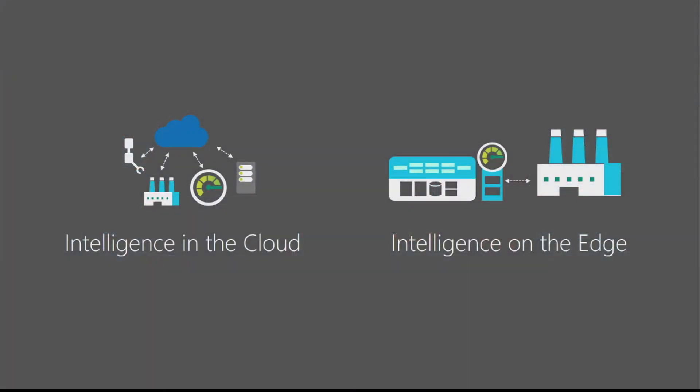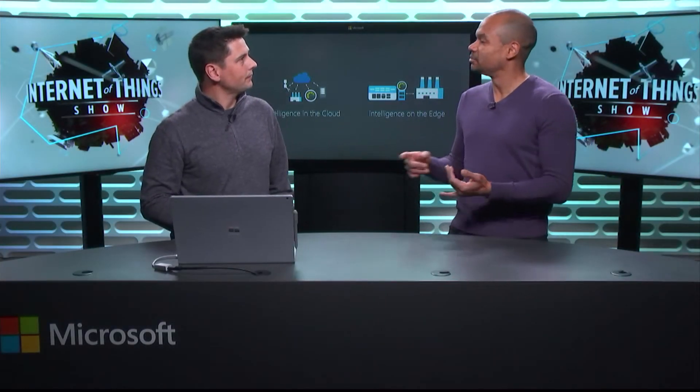Azure IoT has a bunch of services that run in the Cloud, and traditionally IoT has been about having devices send data up to the Cloud, and then using Cloud services like machine learning or stream analytics to find business insights from the data that the devices are sending. However, there are many times where you don't want to have to send the data to the Cloud to find those insights — you want to find those insights locally on the devices.